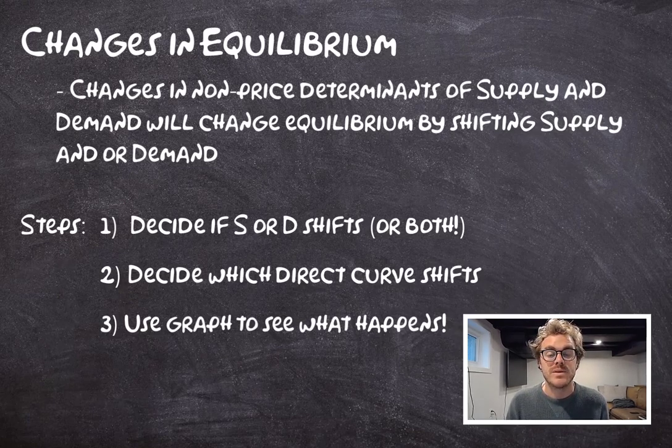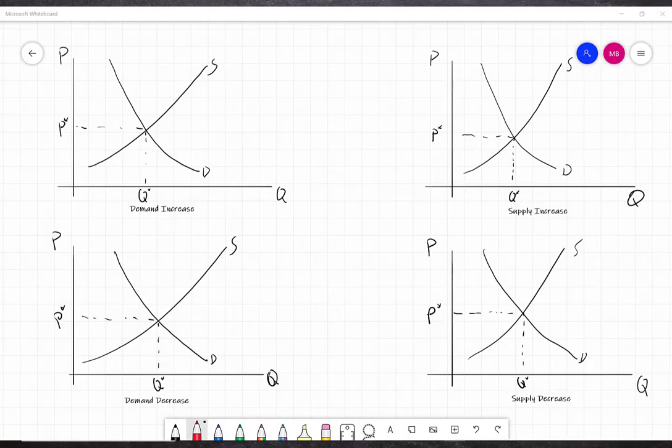Let's look at four different things that could happen in our supply and demand framework. Starting with an increase in demand — for instance, the number of buyers increases or something becomes fashionable. That's going to cause an increase in quantity demanded at each price, shifting the entire demand curve to the right, from demand curve D to demand curve D prime.